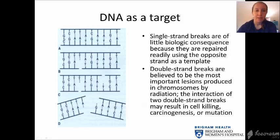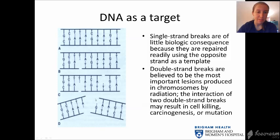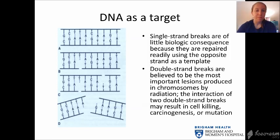DNA that is intact can suffer a single strand break, but the DNA can repair itself because it has a template — it knows, for example, that adenine needs to go here. You can also get another single strand break on the other strand, which can also be repaired using the template. However, a double strand break, where both strands break, is believed to be the most important lesion produced in chromosomes by radiation. The interaction of double strand breaks can result in cell killing, carcinogenesis, or mutation.